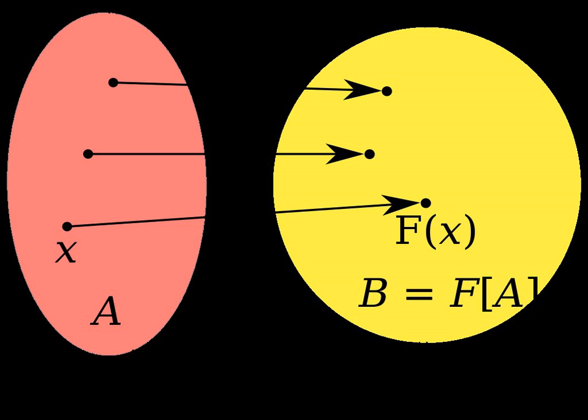The axiom schema of replacement states that if F is a definable class function, as above, and A is any set, then the image F[A] is also a set.